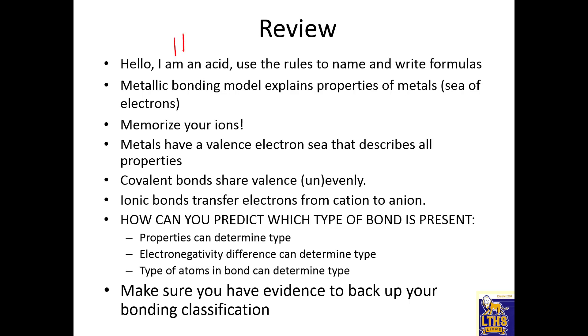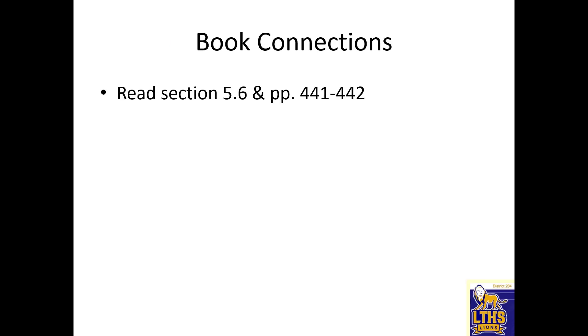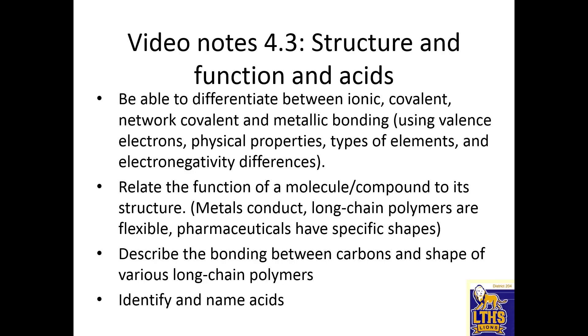So to review, hello, I'm an acid. I start with hydrogen, and you have to know the rules. Metallic bonding, wow, the properties of metals. Memorize your ions. Metals have a valence electron sea that helps describe its properties. Covalent bonds share electrons evenly or unevenly and make molecules. Ionic bonds make cations and anions. Now, how do you know what type of bond is present? You got to know the properties, and make sure you have evidence to back up your claims. All right, peace out. Look at the book. Here's our objectives, and that's it for this chapter. See you guys soon.